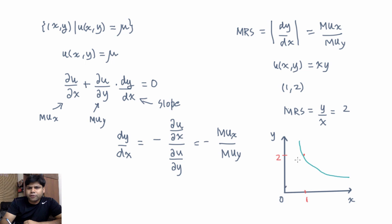So what that means is the following: if you want to make a tangent through the IC at this point, then the absolute value of the slope is going to be 2. So basically slope of this line is 2. That's marginal rate of substitution.